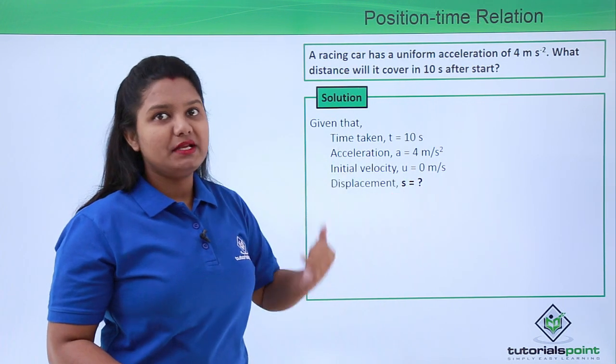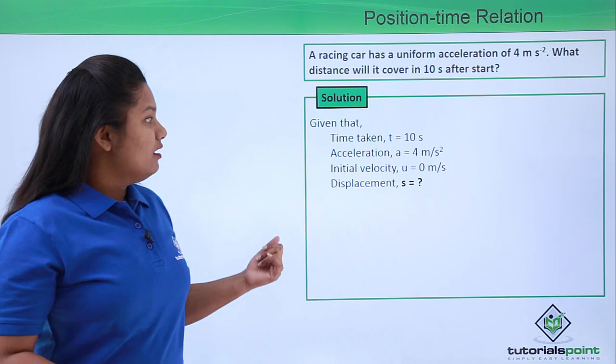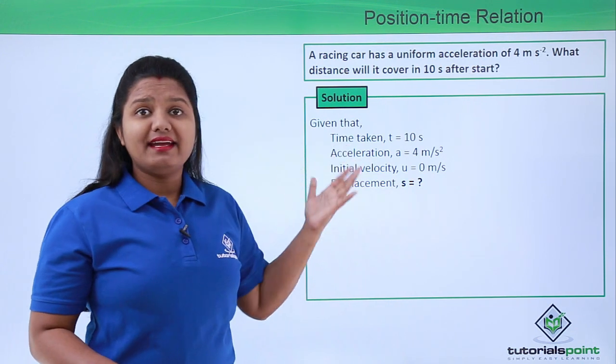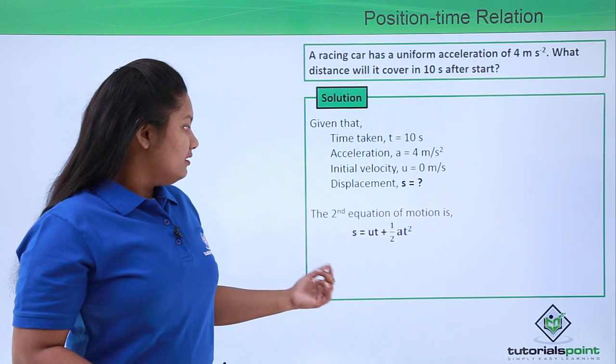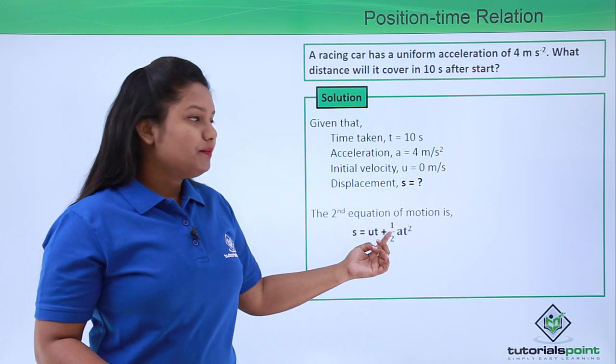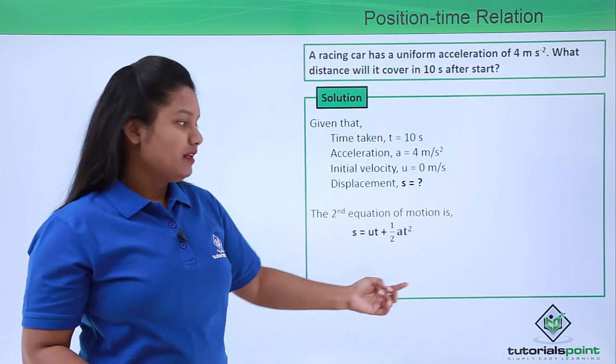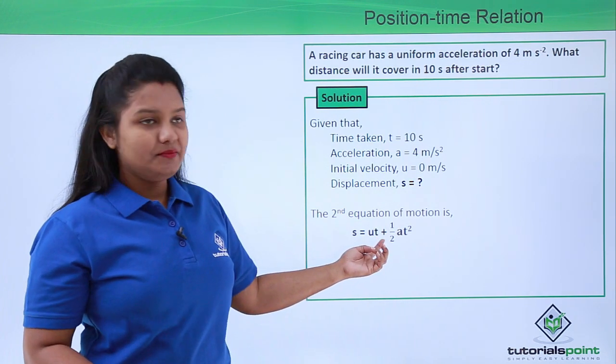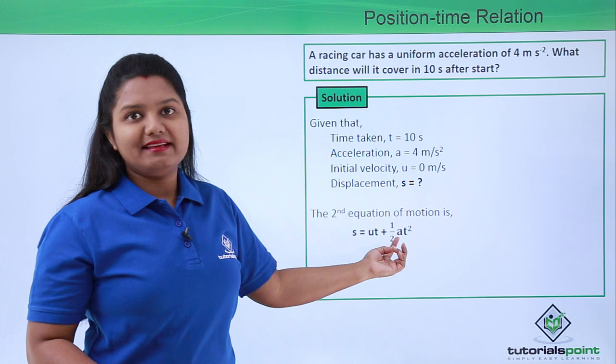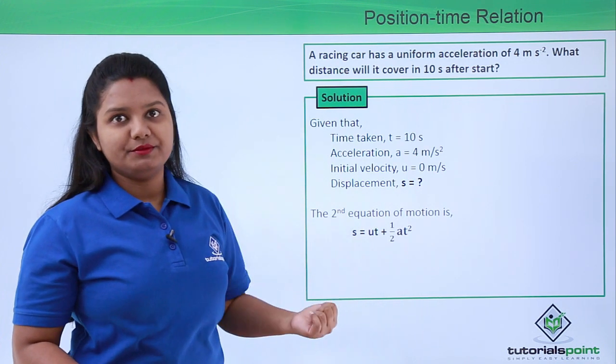Now we can use the second equation of motion to find out the displacement of the car. That is s equals ut plus half a t squared, where s is the displacement, u is the initial velocity, t is the time taken, and a is the acceleration in this equation of motion.